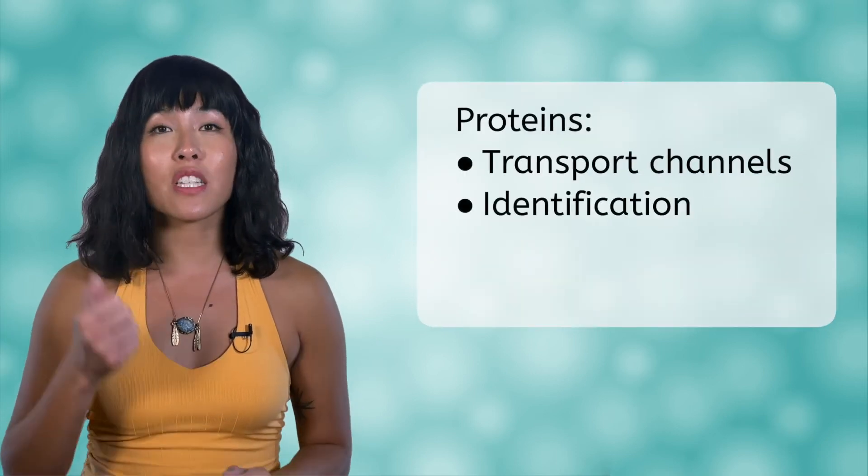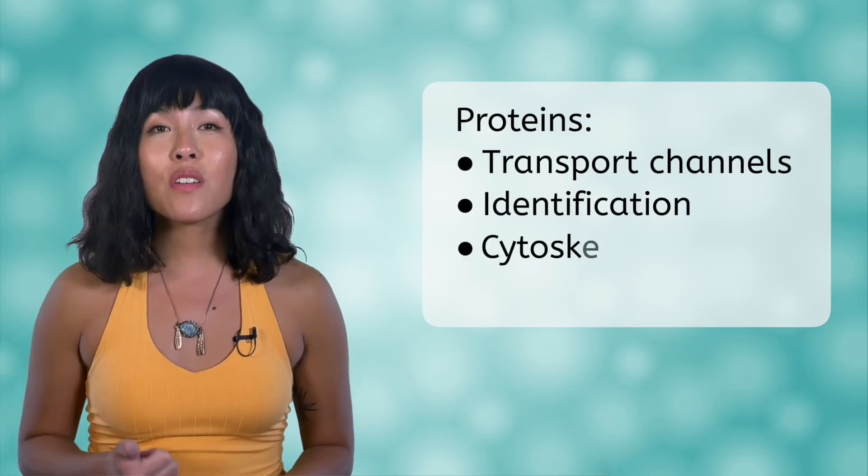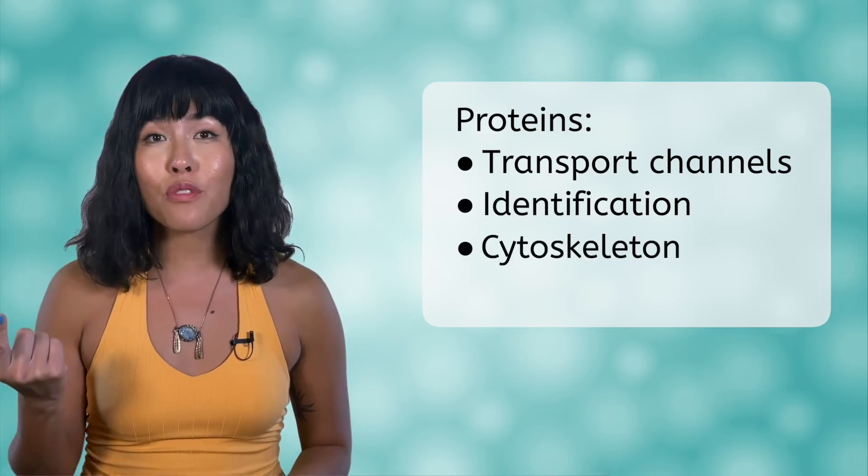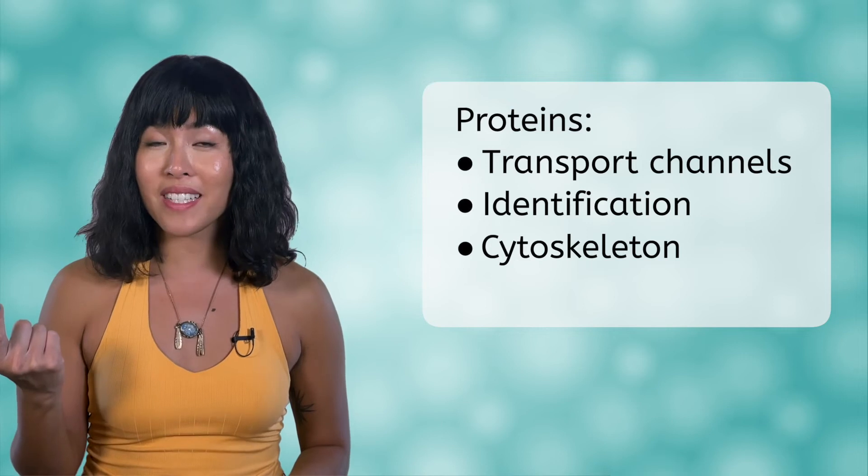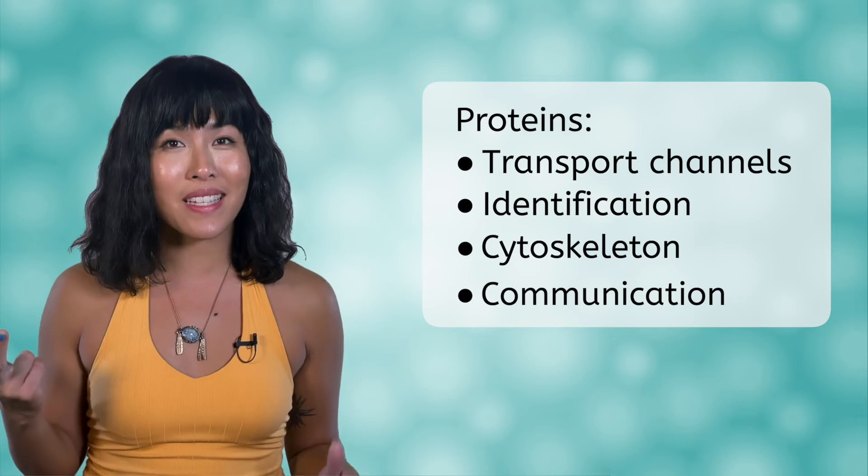Besides acting as transport channels, proteins embedded in the membrane have other functions as well. Some act as markers for identification by neighboring cells. Others can be attachment points for pieces of the cytoskeleton. And some even aid in the communication with nearby cells.